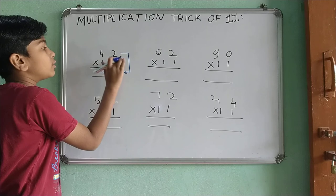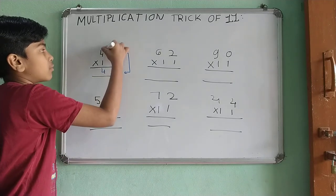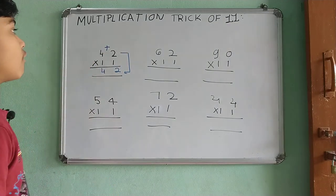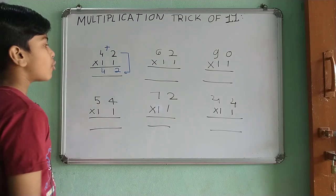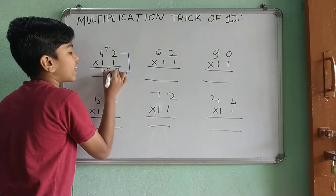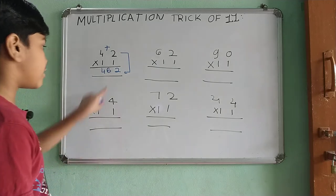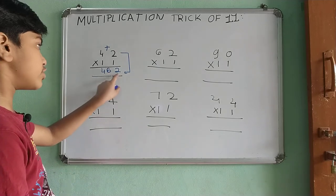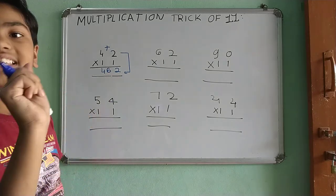Then, this 2 top digit, add them all. Add the top digit. What is going to be our answer? 4 plus 2 is 6. So, write this 6 in the center for 62 is your correct answer.